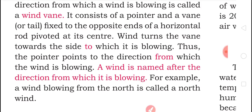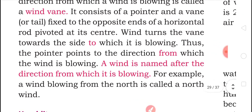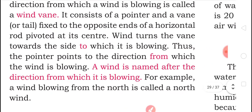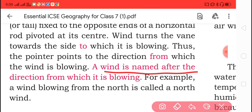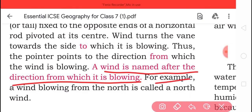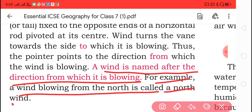A wind is named after the direction from which it is blowing. For example, a wind blowing from the north is called a north wind.